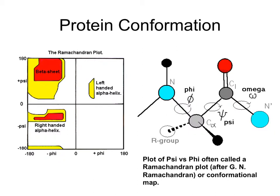In terms of protein conformation, secondary structures are defined by the angle of rotation between the C-alpha and C, and the C-alpha and N. Ramachandran developed a plot to identify protein conformation using phi and psi angles as well as omega angles, which can range up to 180 degrees. When you plot phi-psi angles in the Ramachandran plot, you can identify whether secondary structures are beta sheet, right-handed alpha helix, or left-handed alpha helix depending on the quadrant.